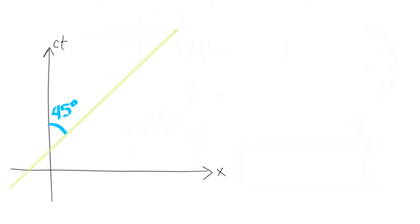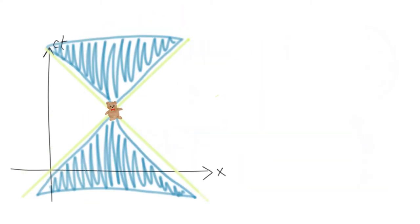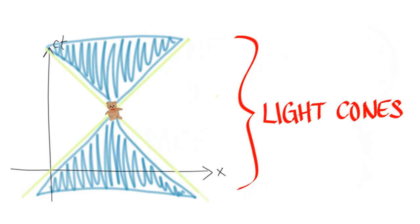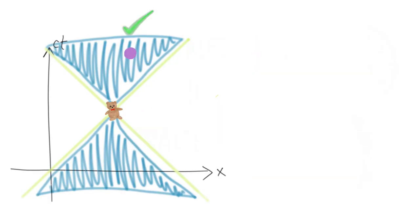Light always travels at a 45 degree angle. It forms these sections, known as light cones, which show all of the events in the past or future that can affect an object at this current position. Anything outside of this light cone cannot interfere with an object at that position.